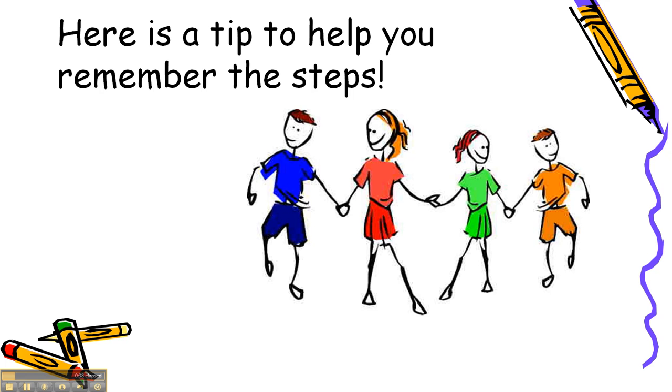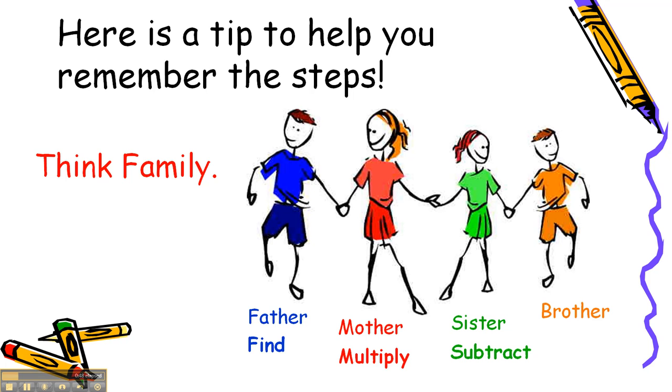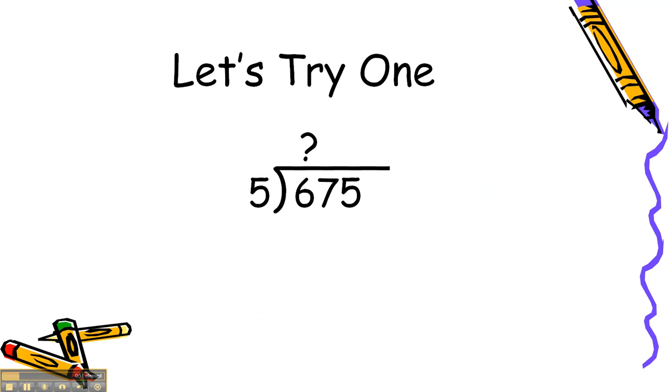Now, here's a tip to help you remember those steps. Think of a family: father, mother, sister, brother. They need to be in that order. Find, multiply, subtract, and bring down. That should help you remember those four steps.